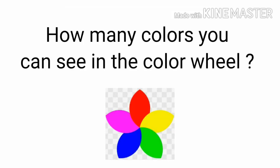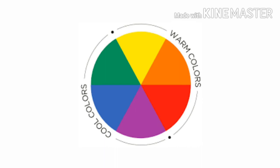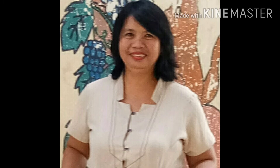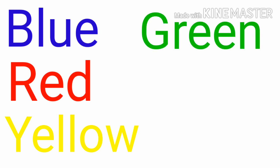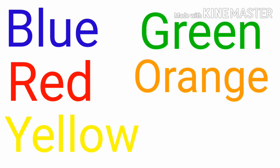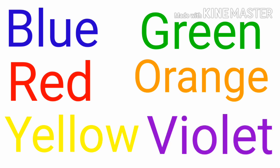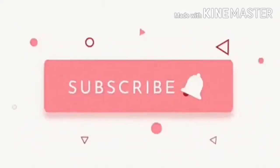How many colors can you see in the color wheel? There are six colors — very good! Now let's read the different colors: blue, red, yellow, green, orange, violet. These are the primary and secondary colors.